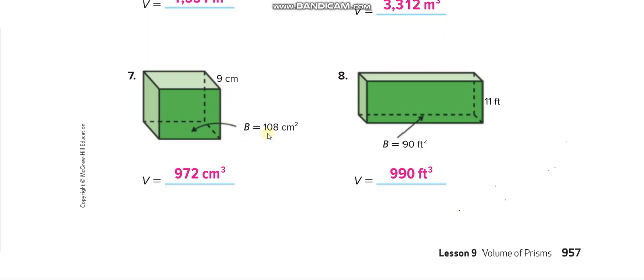Then it's 108 centimeter square. You multiply this 108 with this 9, and you will write your answer in cube because you found the volume. Got it? The same thing again here. Here they give you the area: 90 feet square. Whenever you see the square, it means it is an area. And whenever you see this cube, it means it is volume. So 90 feet, multiply this 90 with 11, and 990 feet cube.